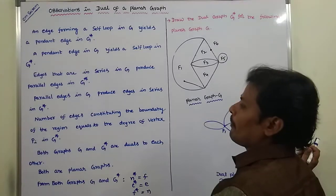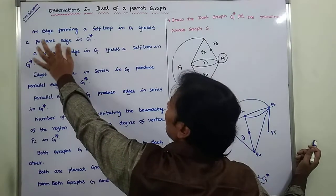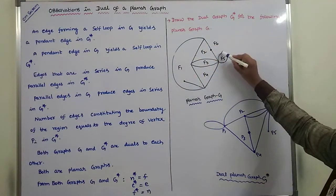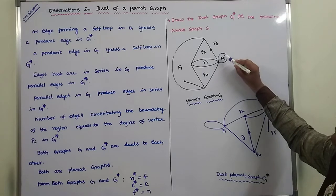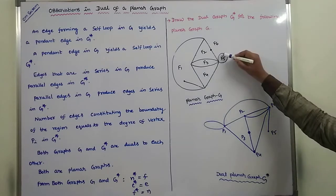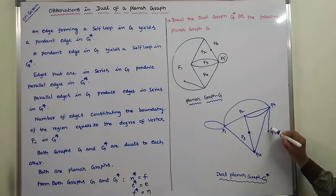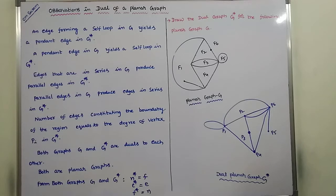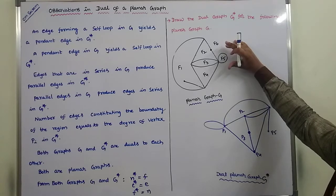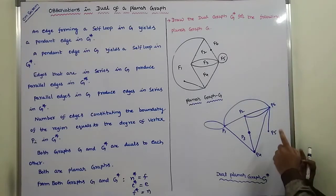First point: an edge forming a self-loop in G is a pendant edge in G star. Suppose in the given graph G, F5 is a self-loop. Whereas in G star, F5's corresponding vertex is P5, and here P5 is the pendant edge. If any self-loop is there in the given graph, in the dual G star the corresponding vertex contains a pendant edge.